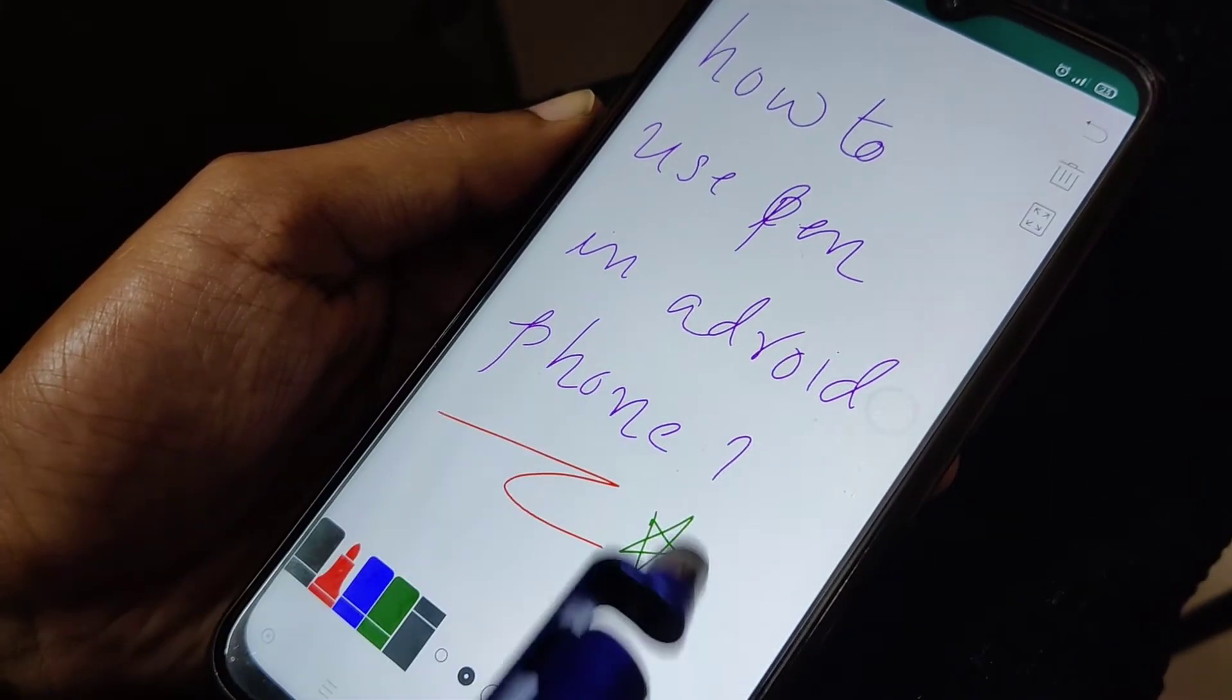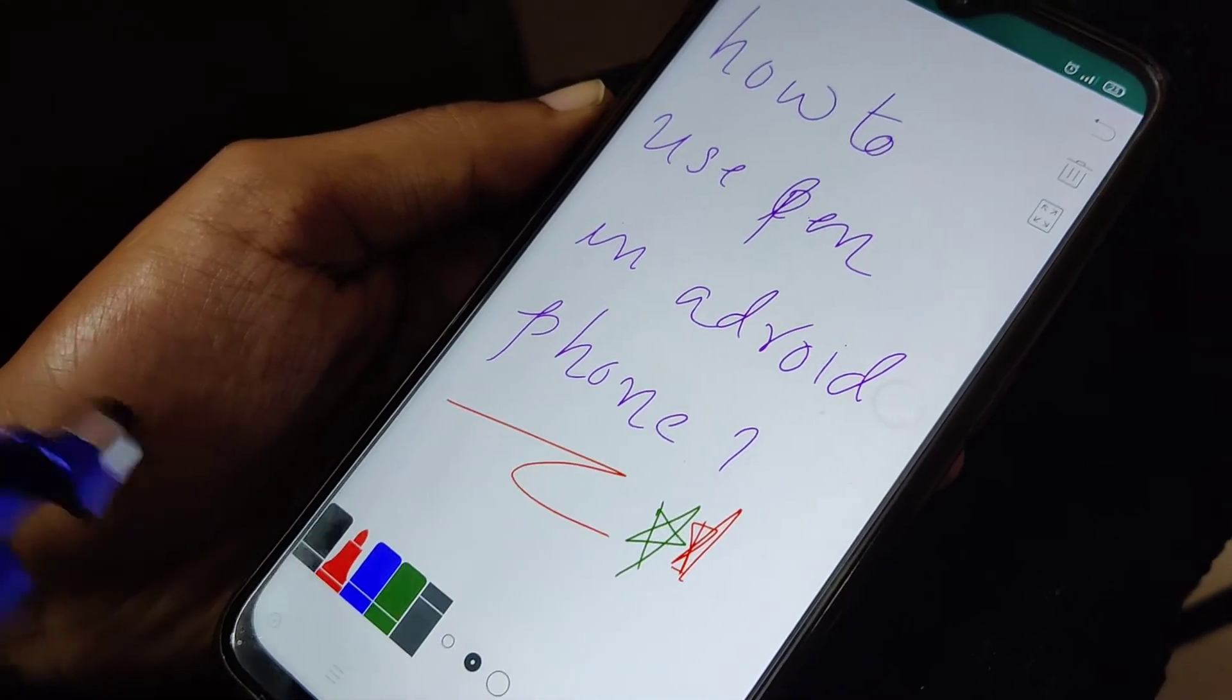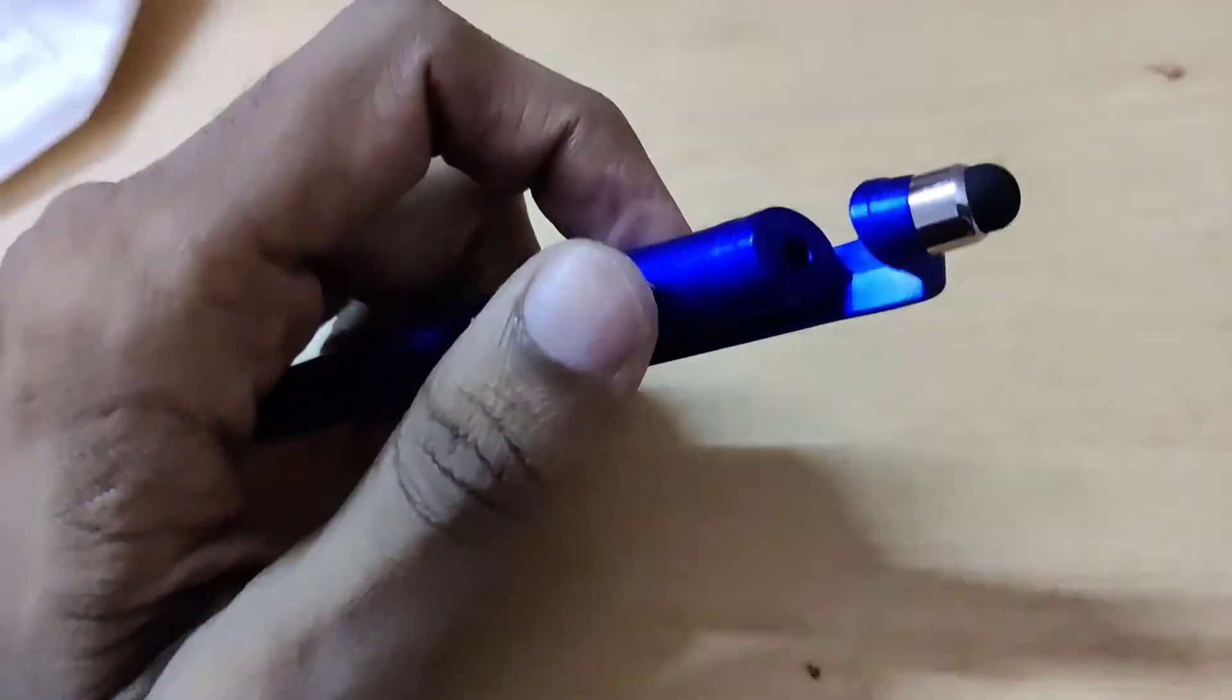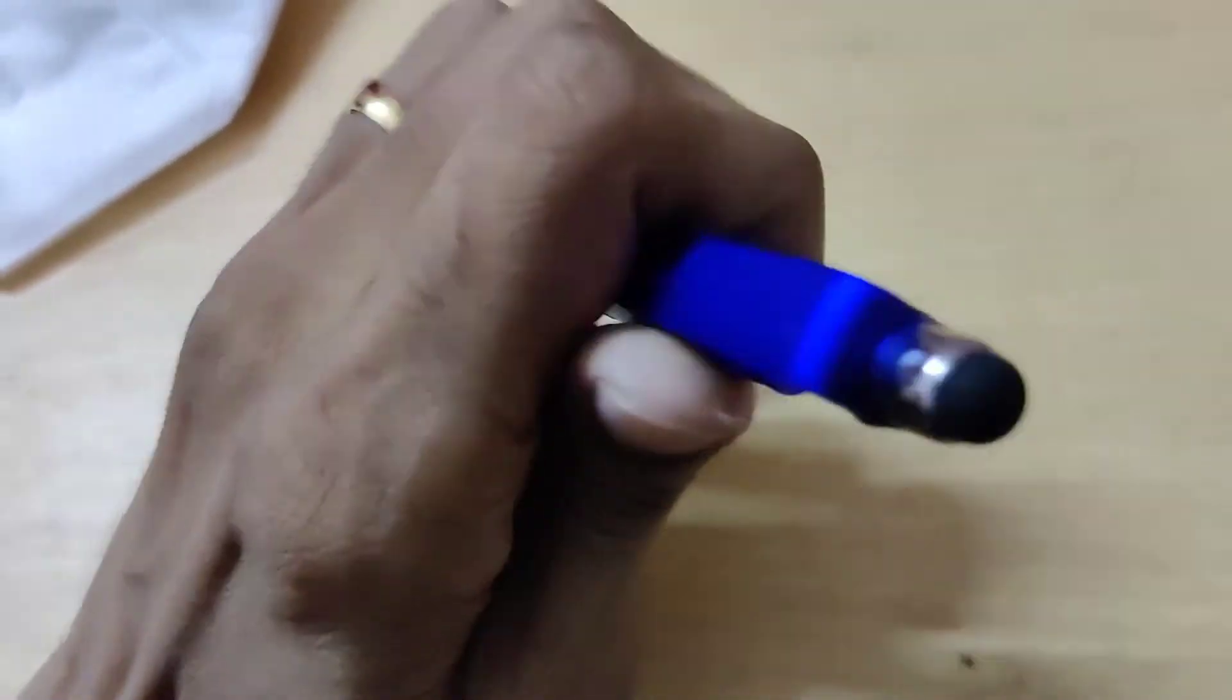You can write in different colors on your android phone using this kind of pen. This is available in the market and it is very cheap. I think it is available for 30 rupees.